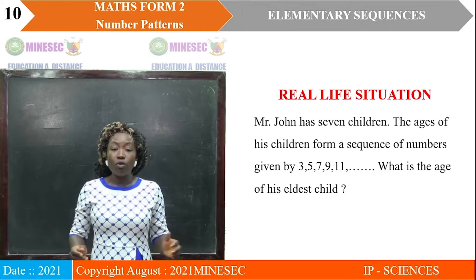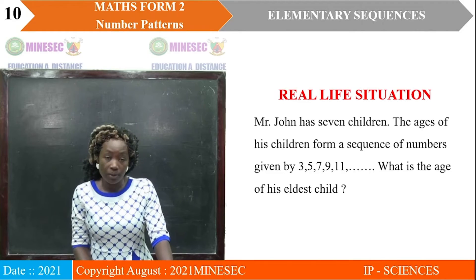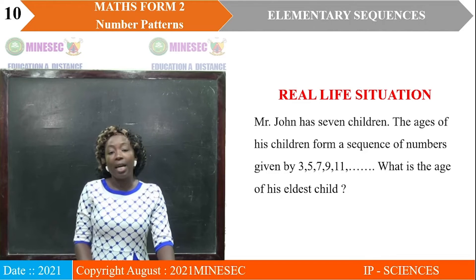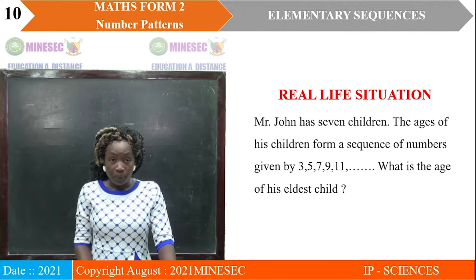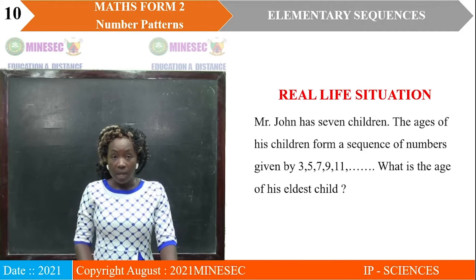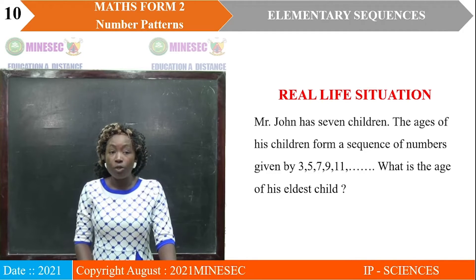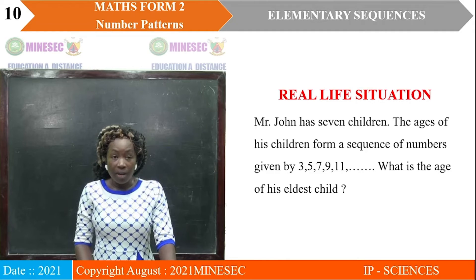Now let's look at the real life situation. I will read the question — you follow attentively, attempt it, and at the end of the lesson we are going to look at it together. Mr. John has seven children. The ages of his children form a sequence of numbers given by 3, 5, 7, 9, 11.